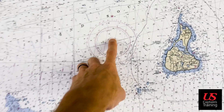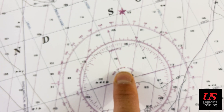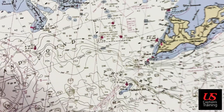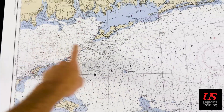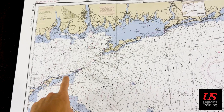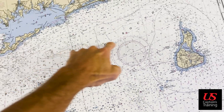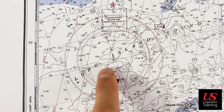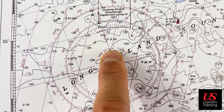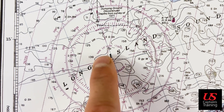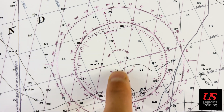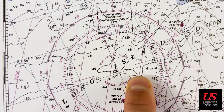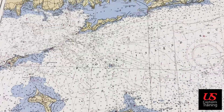This compass rose is located near Block Island and reads 14°45'. The other compass rose, located about 20–25 miles away, reads variation 14°30' with an annual increase of four minutes. So we have 14°45' here with an annual increase of three, and 14°30' over there with an annual increase of four — interesting how they differ even within the same chart.